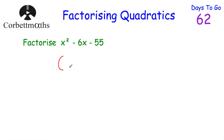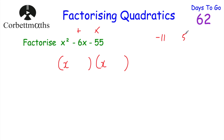Next we've been asked to factorise another quadratic, so let's put our brackets down. Because it's just x squared, we have x at the front of each bracket. The two numbers must multiply together to give negative 55 and add together to give negative 6. I'm thinking negative 11 and 5, because negative 11 times 5 is negative 55, and negative 11 plus 5 is negative 6. So the answer is x minus 11 times x plus 5.